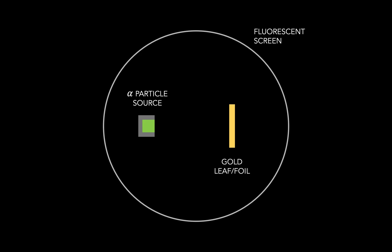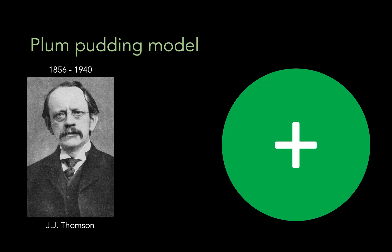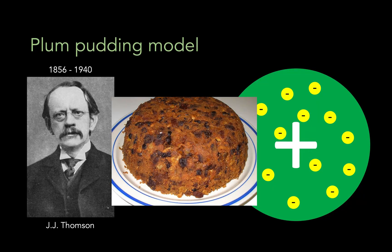Now, according to the conventional wisdom of the day, the alpha particles should have just gone right through, and this is because the prevailing model of the atom was the plum pudding model, put forward by J.J. Thompson, discoverer of the electron. Thompson believed that the atom was essentially a positively charged lump, in which were placed some negatively charged electrons, such that the positive and negative charges balance out. And this kind of resembled the plum pudding, an English dessert that was dotted with raisins, or plums, as they were called.